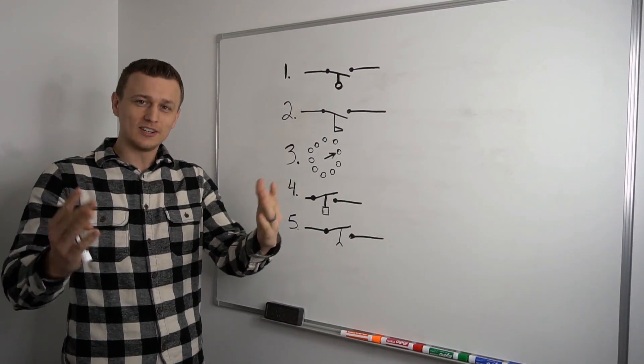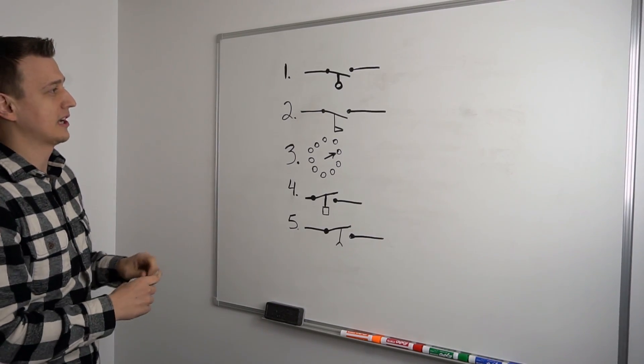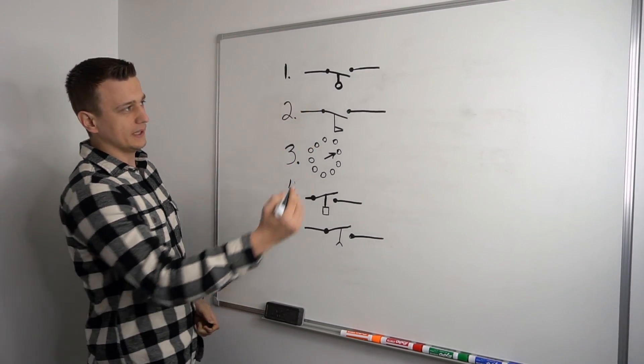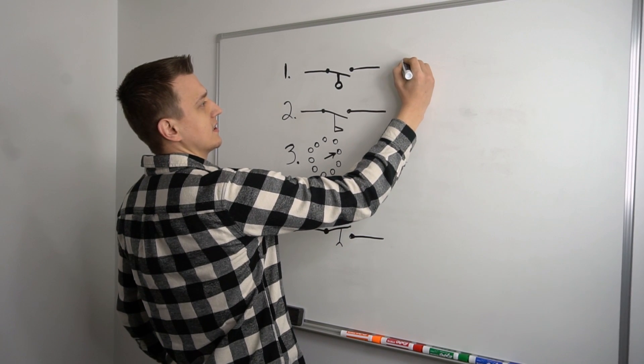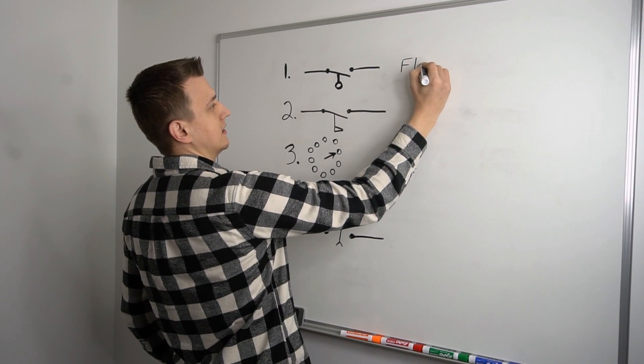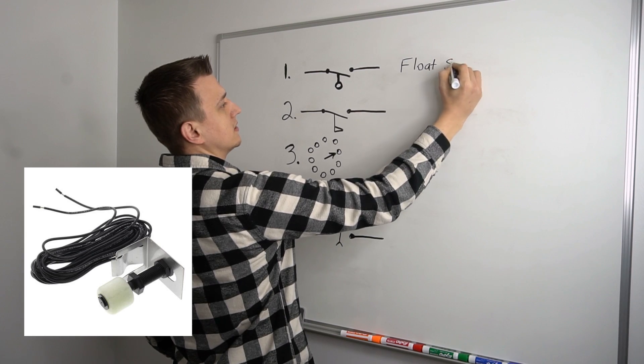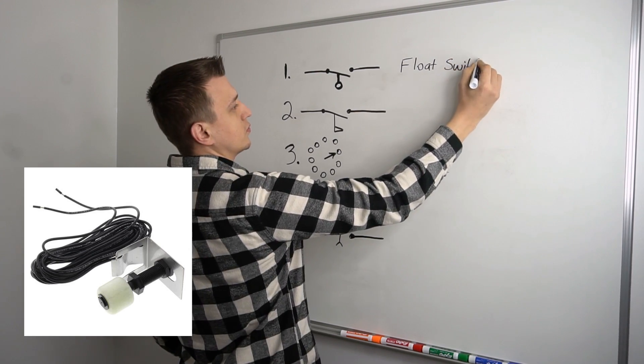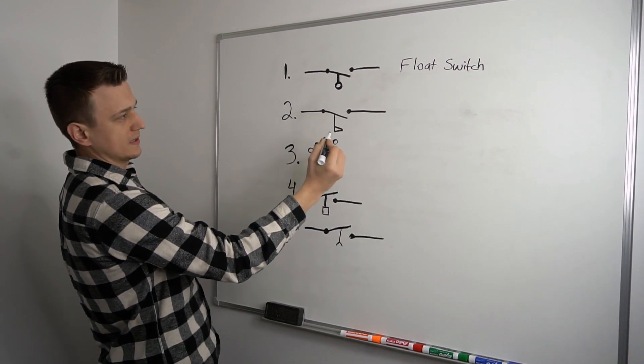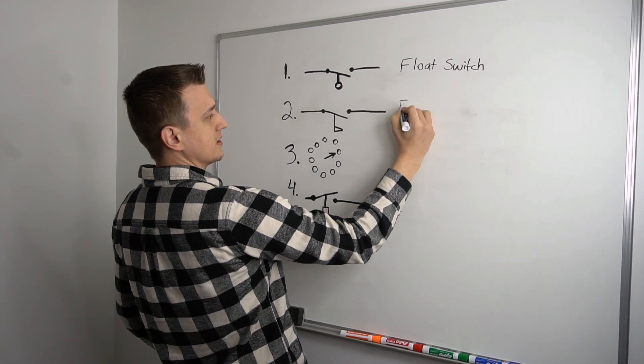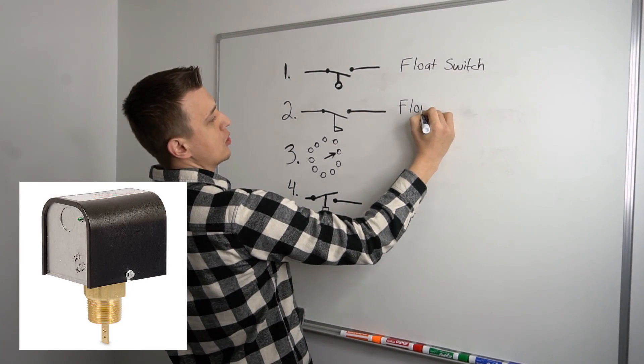So here is our last set of electrical switches. Let's start with the first two up on top here. The one on top is a float switch. And the one below it is similar, but it's a little bit different. This one is a flow switch.